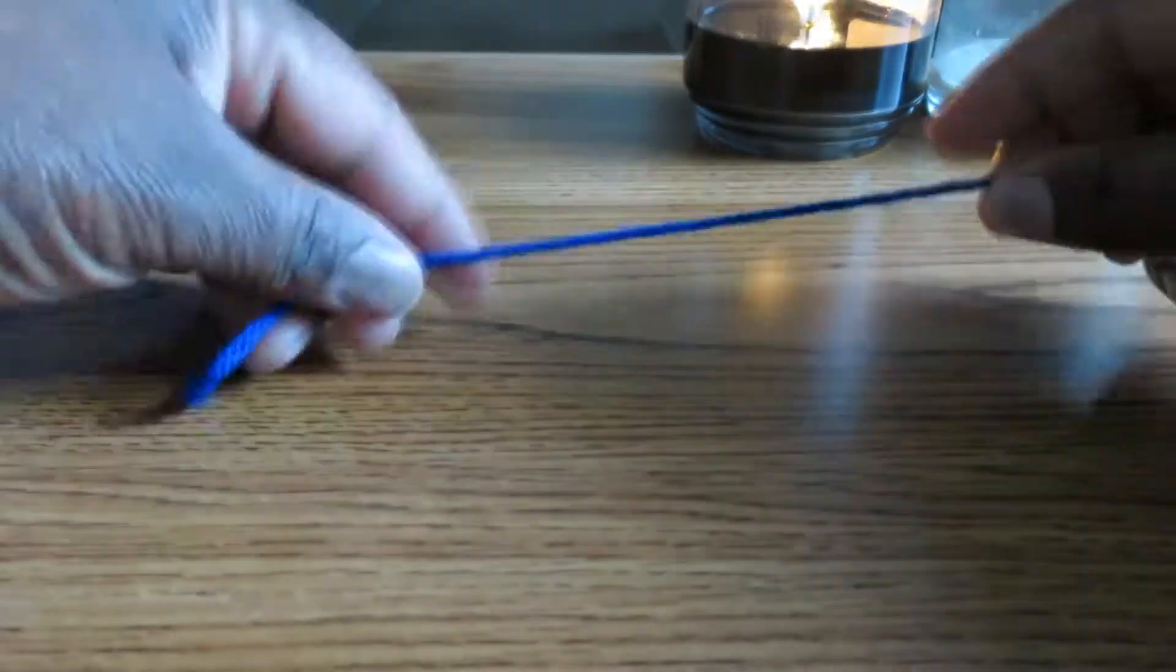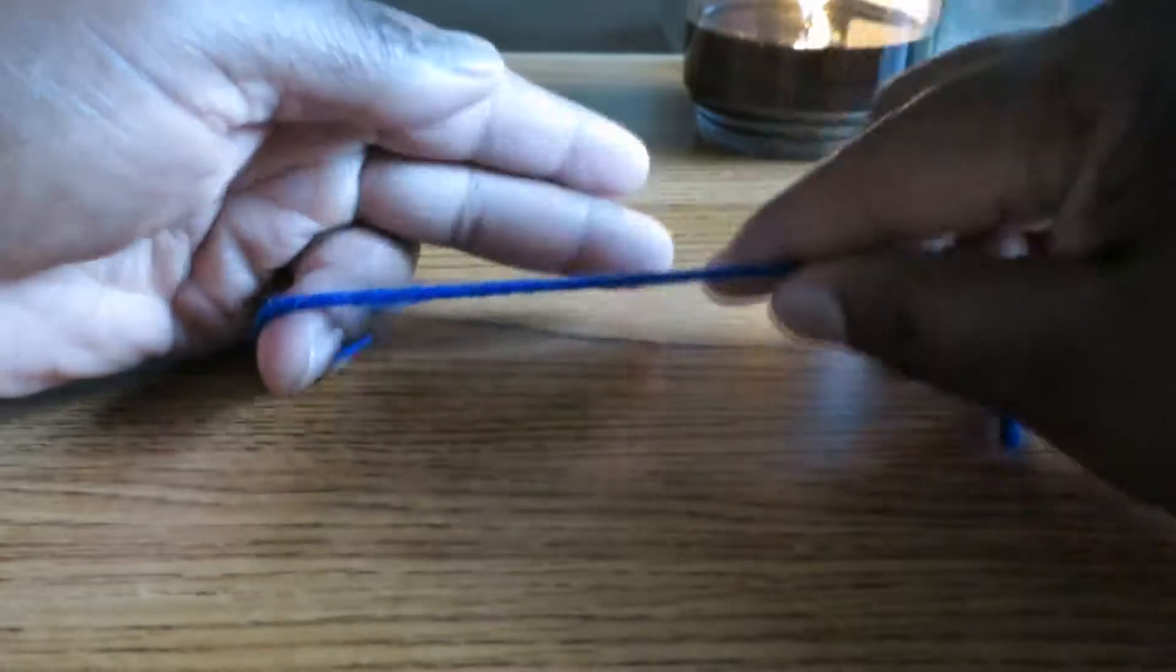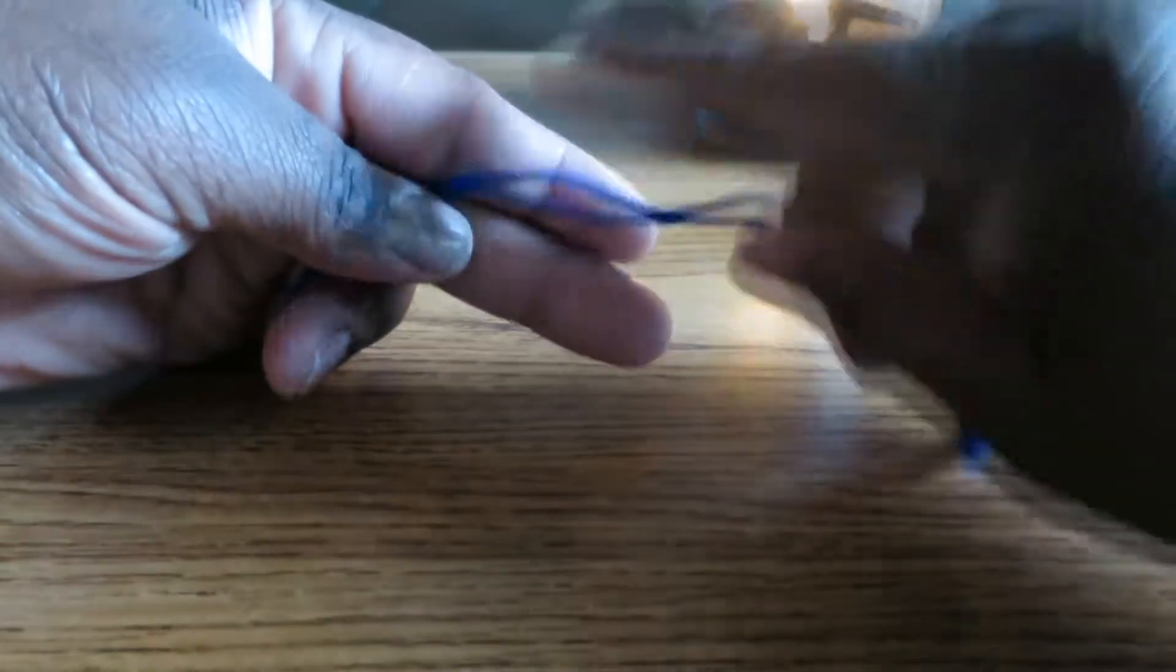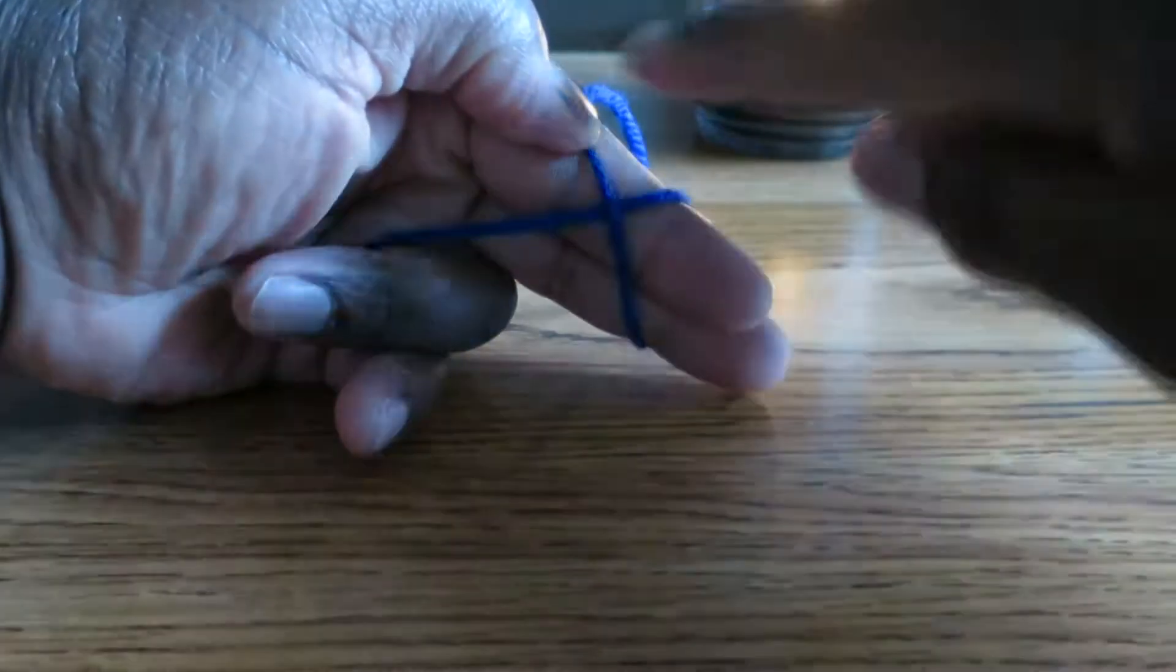Alright, so you're going to take your yarn and you're going to measure out that length, whatever length you want. And you're going to wrap this yarn around these two fingers here, like that. It's going to make an X, as you see, where it crosses over.